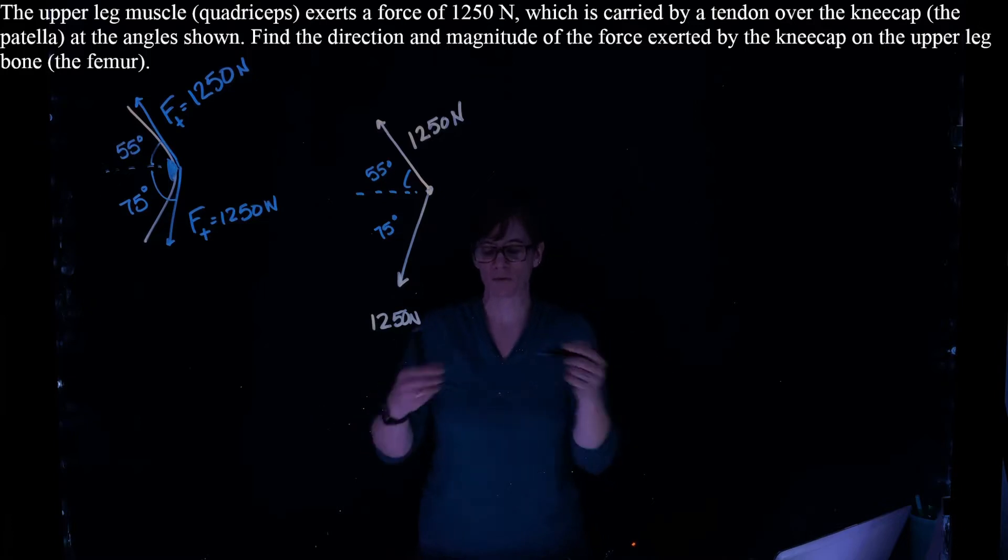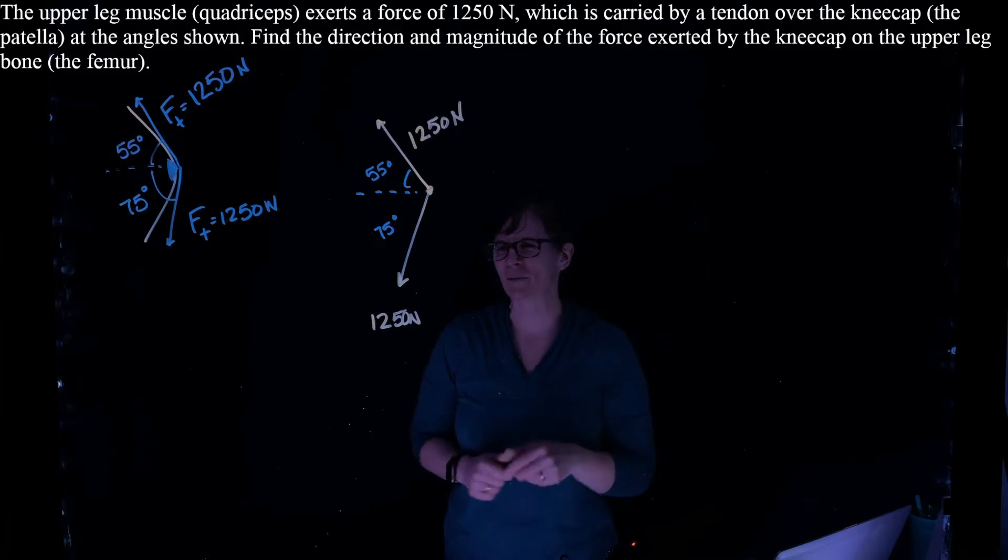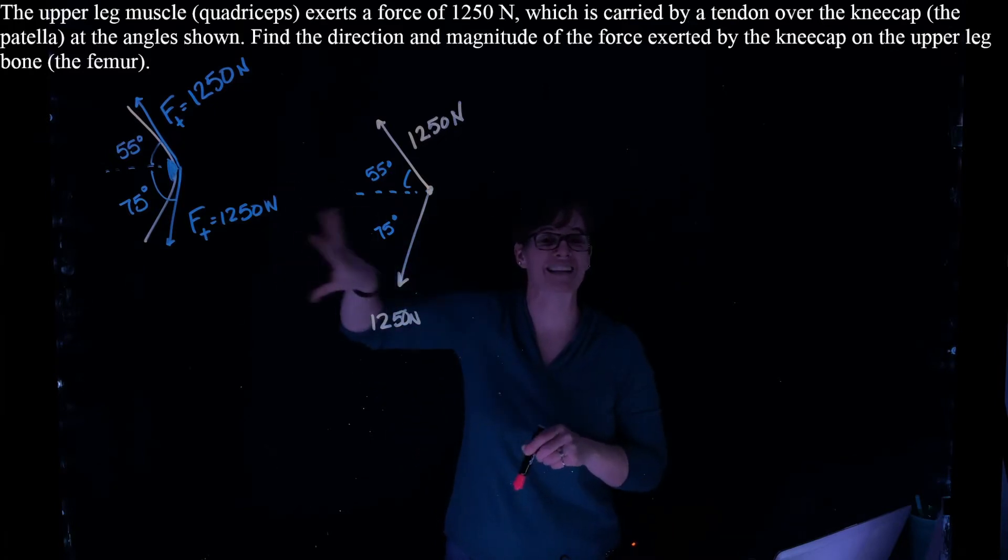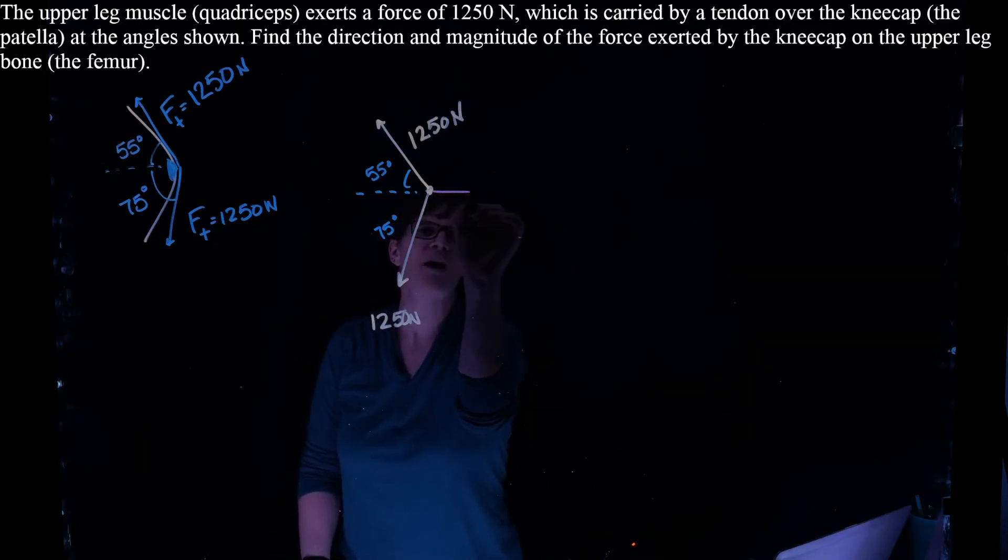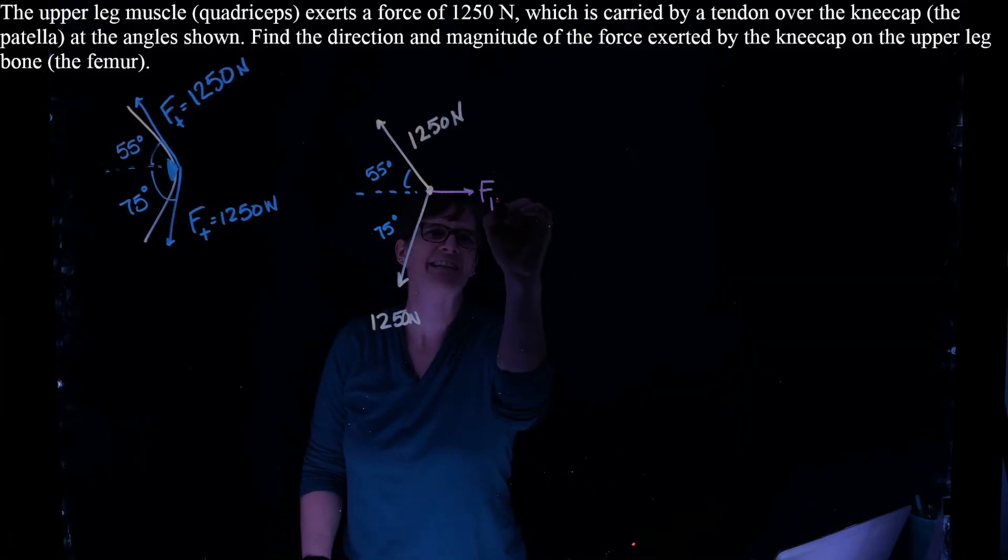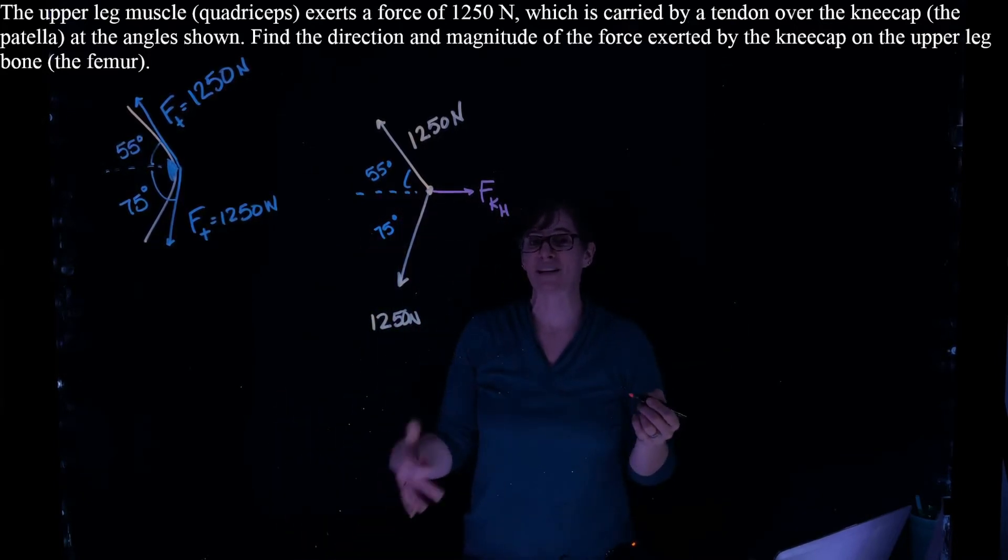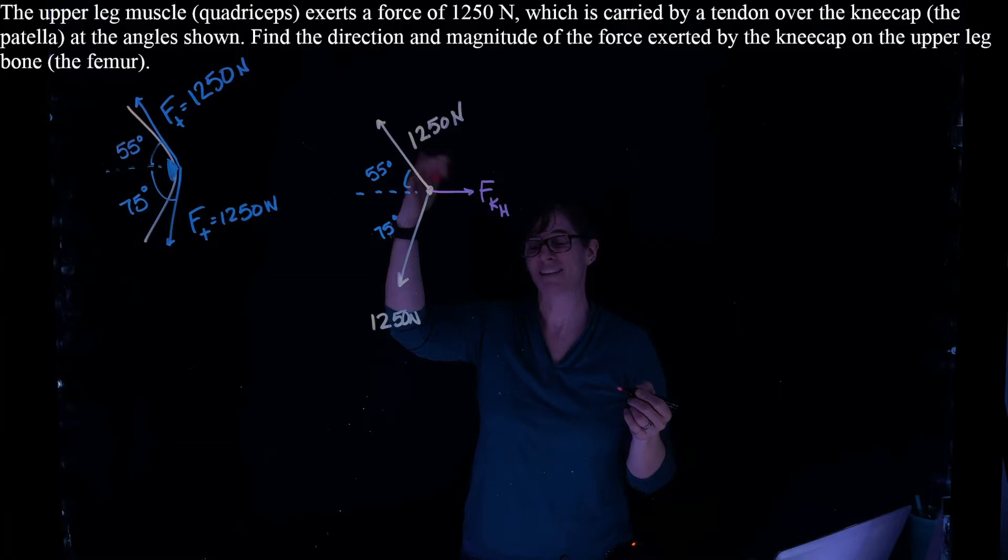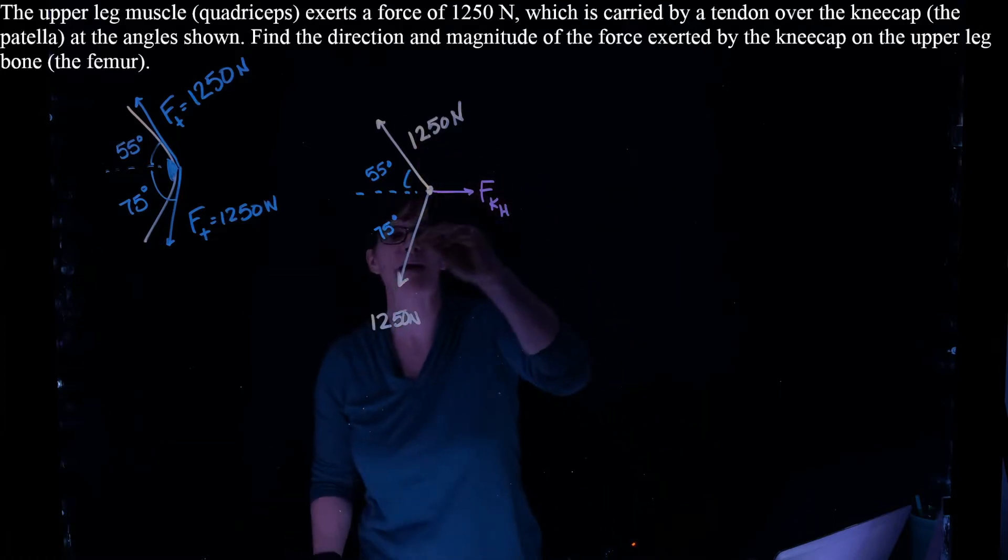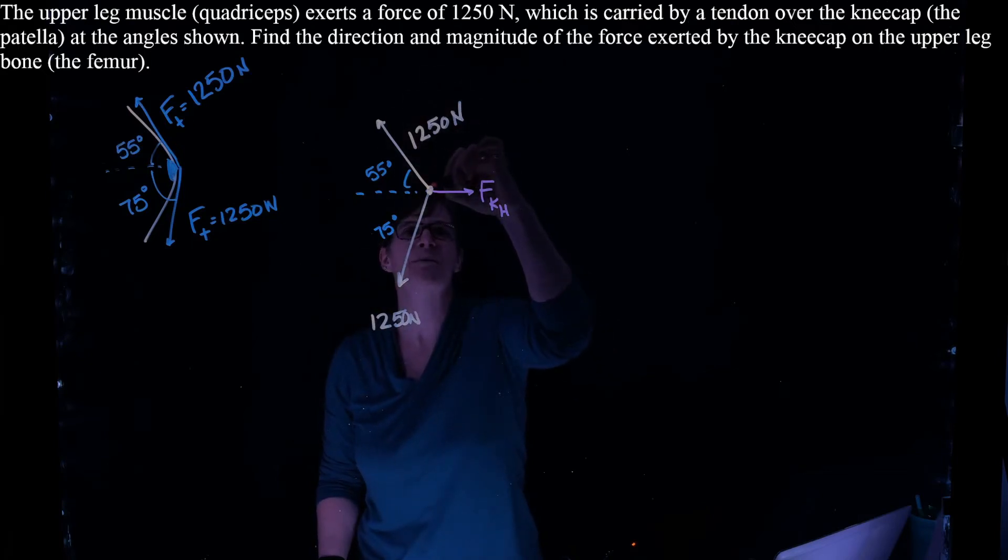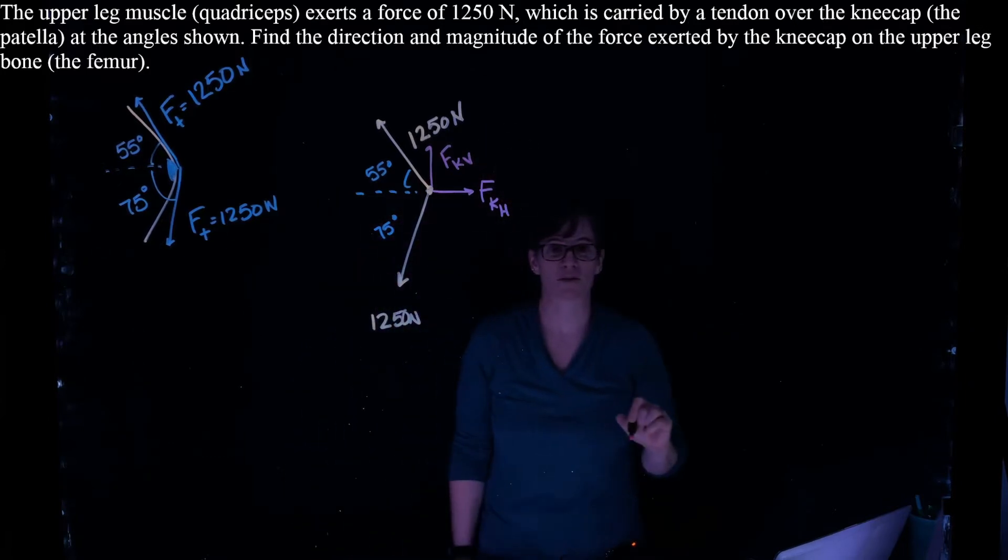And so we want to know what the force is on that kneecap in this equilibrium. Well, we might be able to do a little bit of intuition here. If both those forces are pushing to the left, we know that there's going to be a horizontal component, the force of the knee is going to have to be to the right. Then the second piece is, is the vertical component of the knee up or down? We might suspect, since this has a larger vertical component than this one, that the force of the knee vertical is going to be in the upward direction.